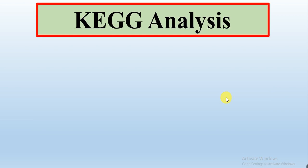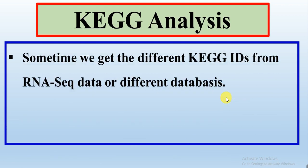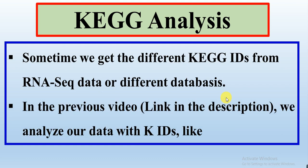In this video, we will also do the KEGG analysis. Sometimes we get different KEGG IDs of our genes from RNA-seq data or from different databases like KEGG ID or the Pathway ID. In the previous video — the link of that video is present in the description — we analyzed our data with the K IDs, where our genes have the KEGG IDs in the form of K IDs.